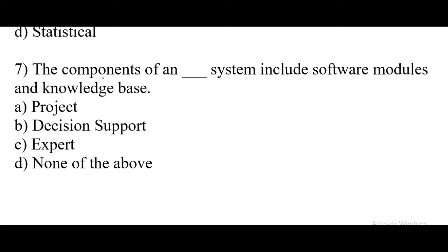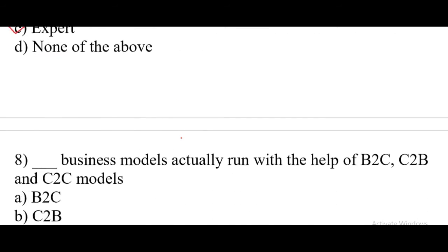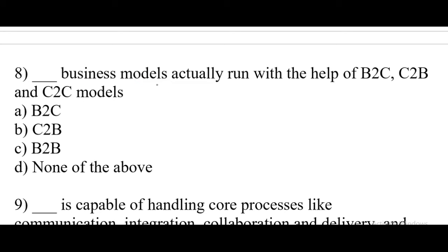Question number 7. The components of an dash system include software modules and a knowledge base. Right answer is Option C. Question number 8. Dash business models actually run with the help of B to C, C to B and C to C models. Right answer is Option C: B to B.